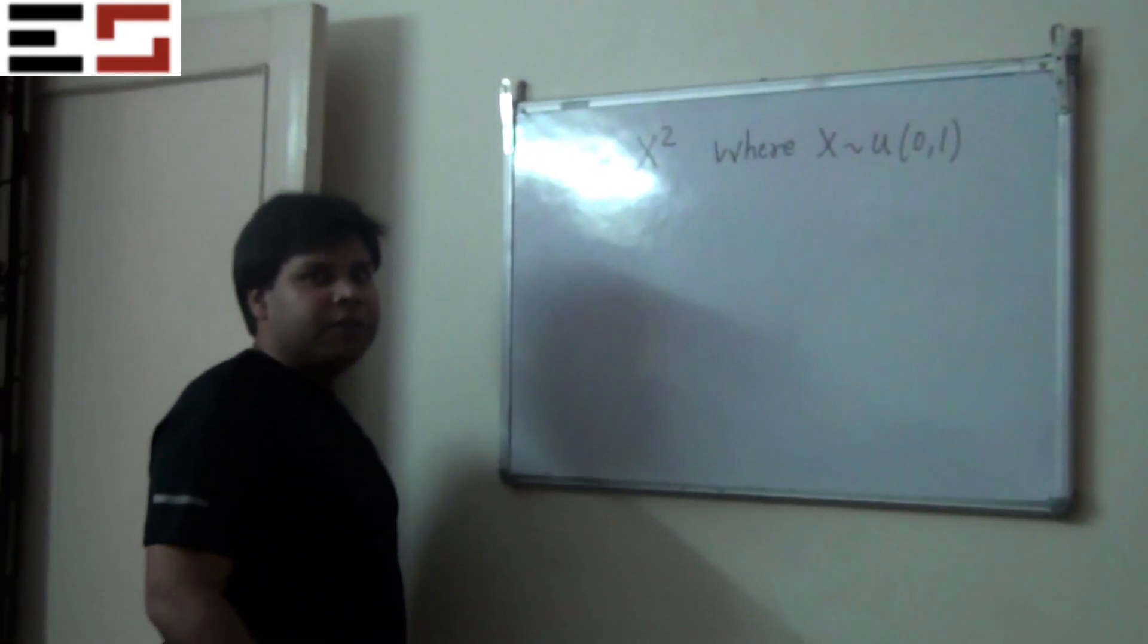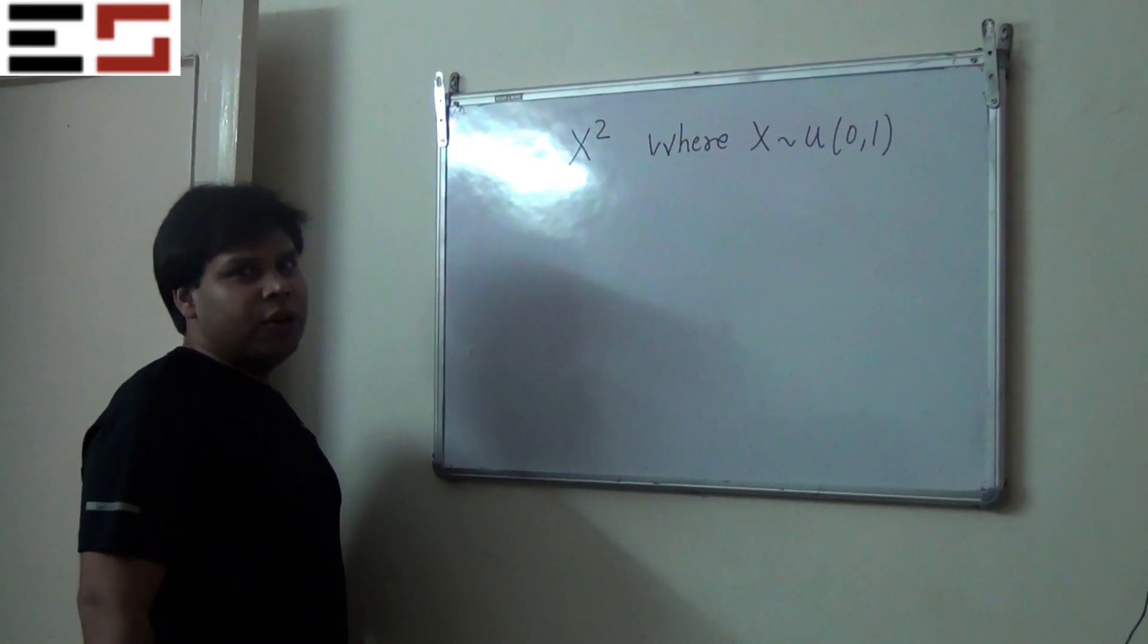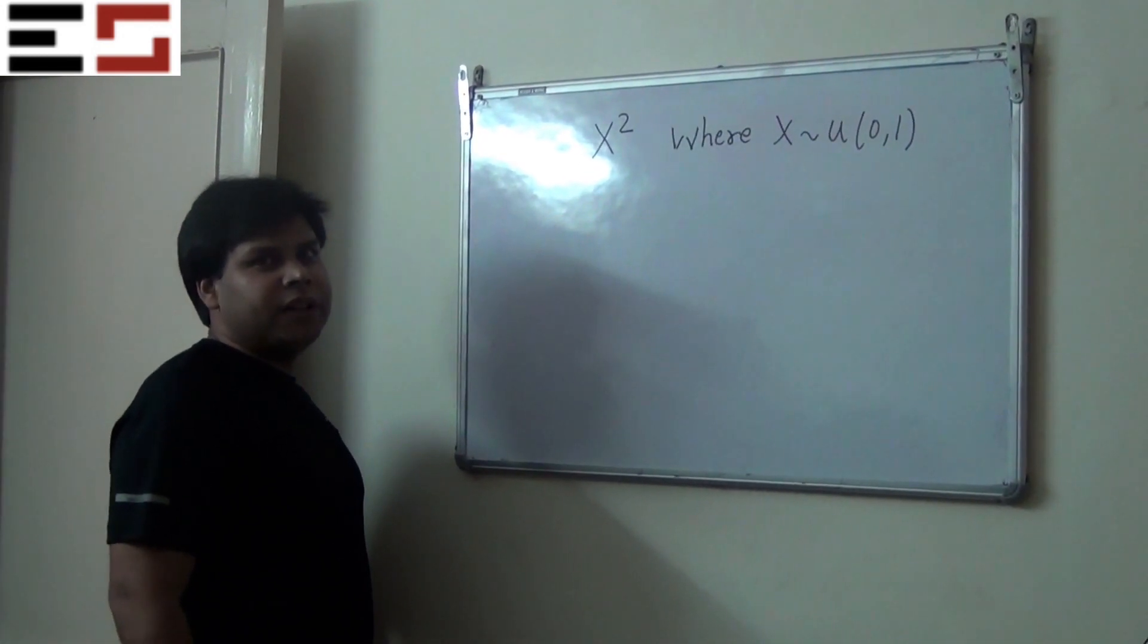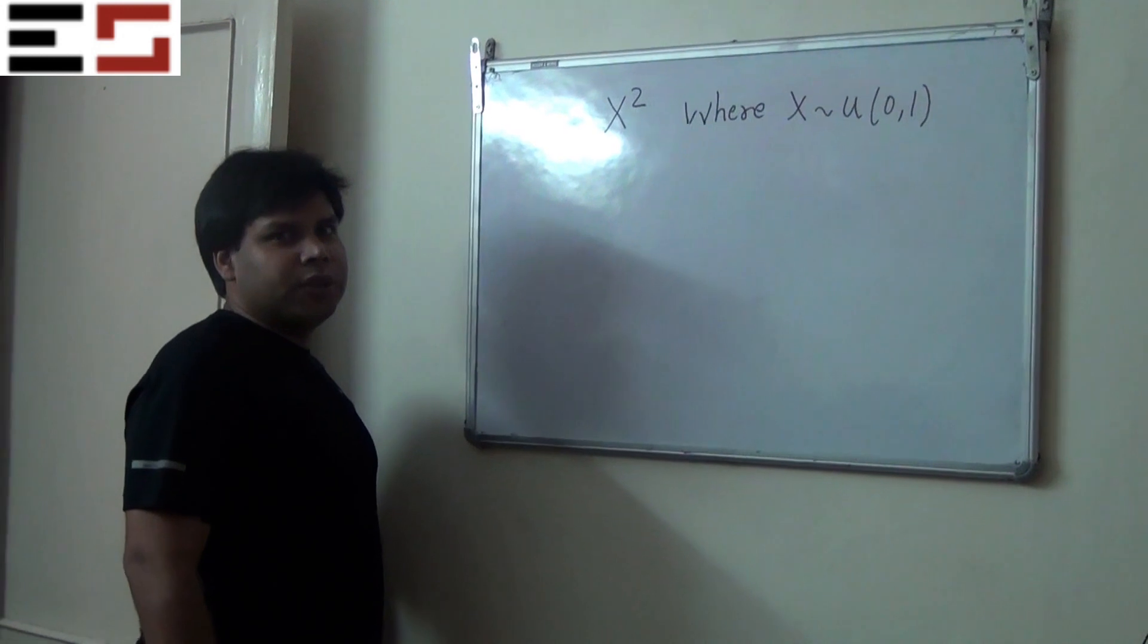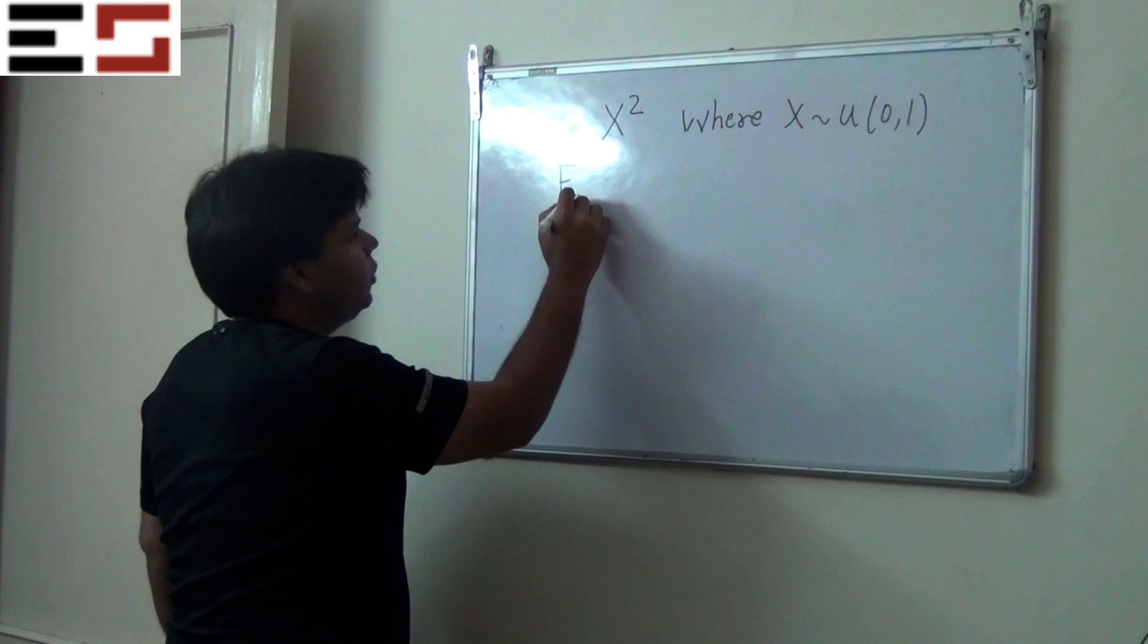So in order to find the PDF, the first step is to first find the CDF of x squared and then find the PDF of x squared. So what is the definition of CDF of x squared?